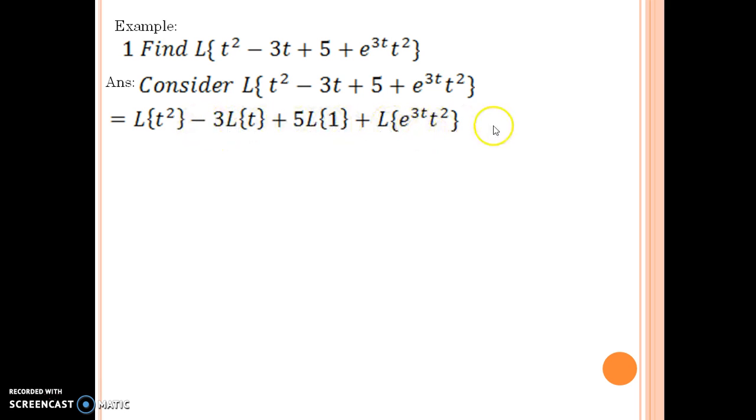That is because we are aware that Laplace operator L is a linear operator. We are able to do this step. Then we can individually start applying the formulas that we have found. Laplace of t² is nothing but from our formula list, it is Γ(2+1) divided by s^(2+1). Similarly, we can find Laplace of t and Laplace of 1.